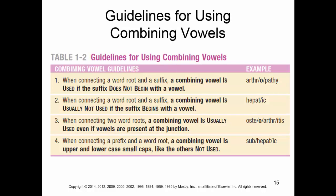Here are the formal guidelines for using combining vowels. The first two cases involve connecting a word root and a suffix. A combining vowel is used if the suffix does not begin with a vowel — for example, arthropathy, where pathy does not begin with a vowel, so we put the O in there. If the suffix begins with a vowel, the combining vowel is usually not used — so we say hepatic, not hepatoic.